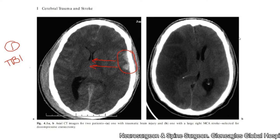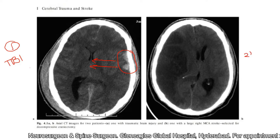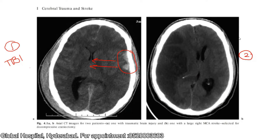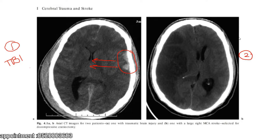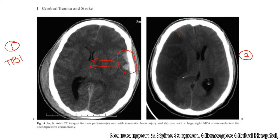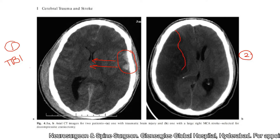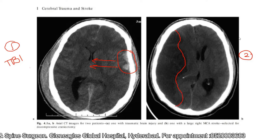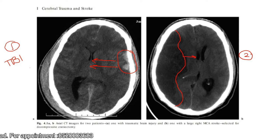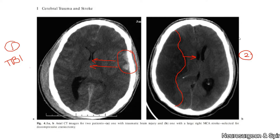The second classical indication is a stroke — it may be a hemorrhagic infarct or an ischemic stroke. Here you can see a right-sided stroke: a well-defined infarct in the right-sided territory, the frontotemporal parietal region, causing midline shift to the opposite side by more than 5 mm. So these are the two classical indications: one is traumatic brain injury, and the other is a stroke, either ischemic or hemorrhagic.